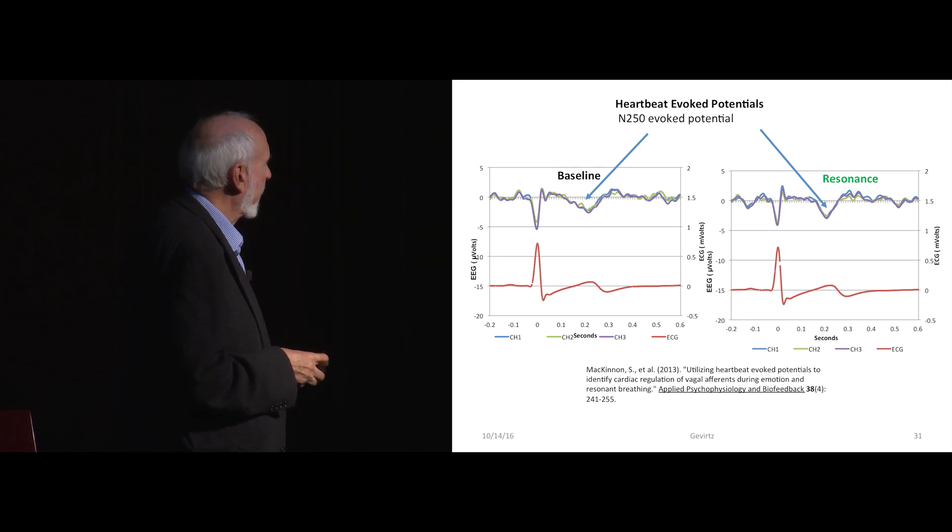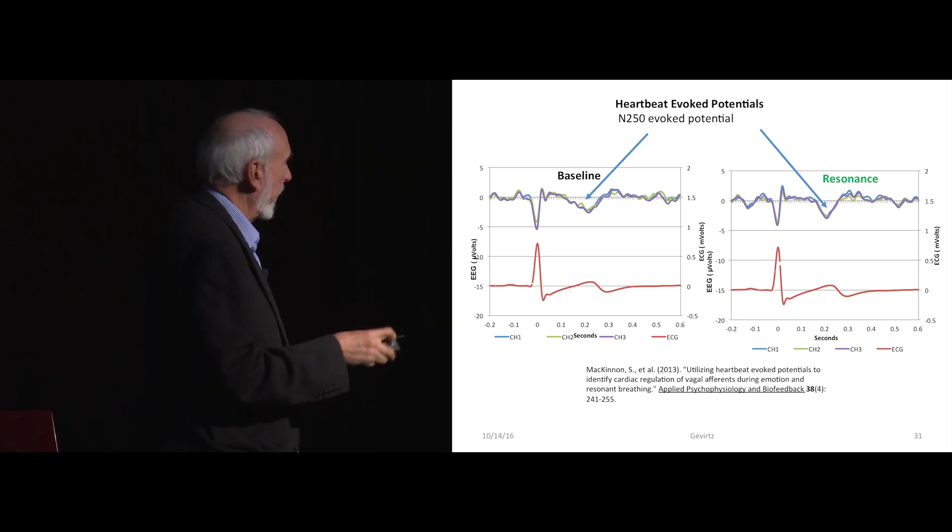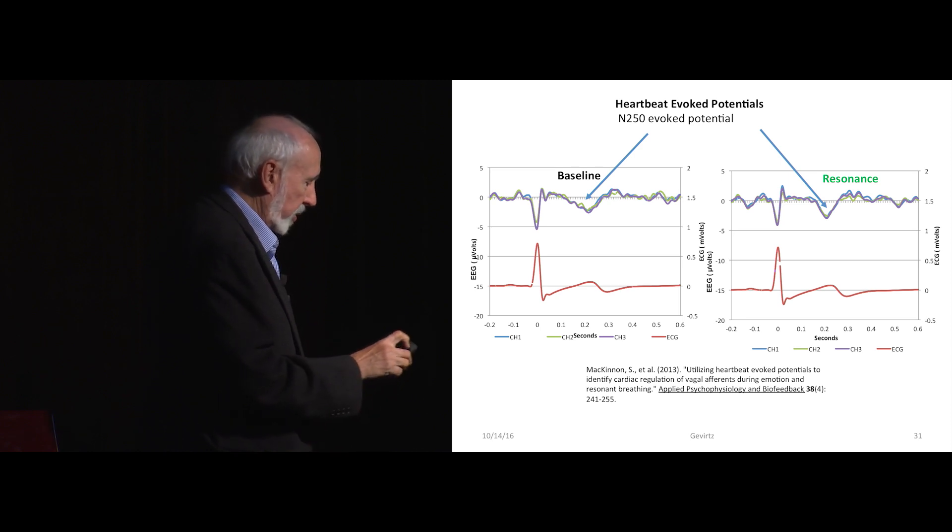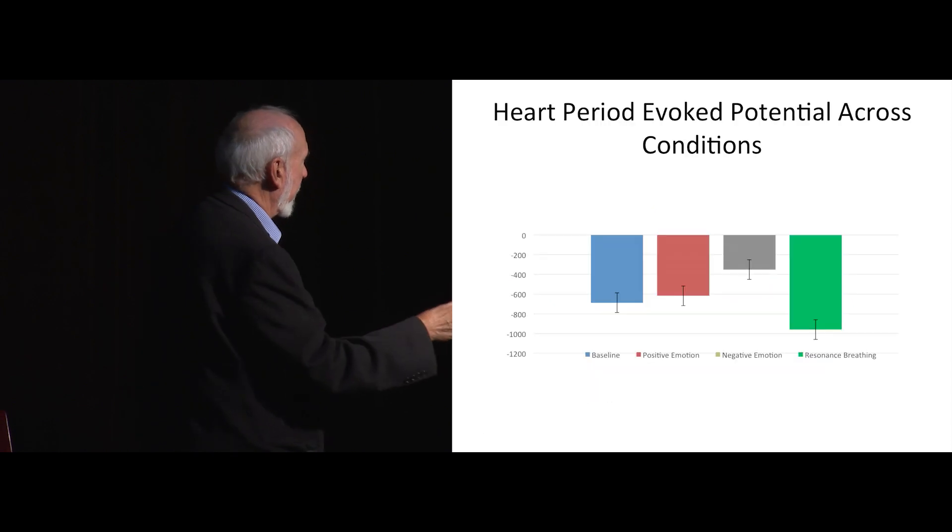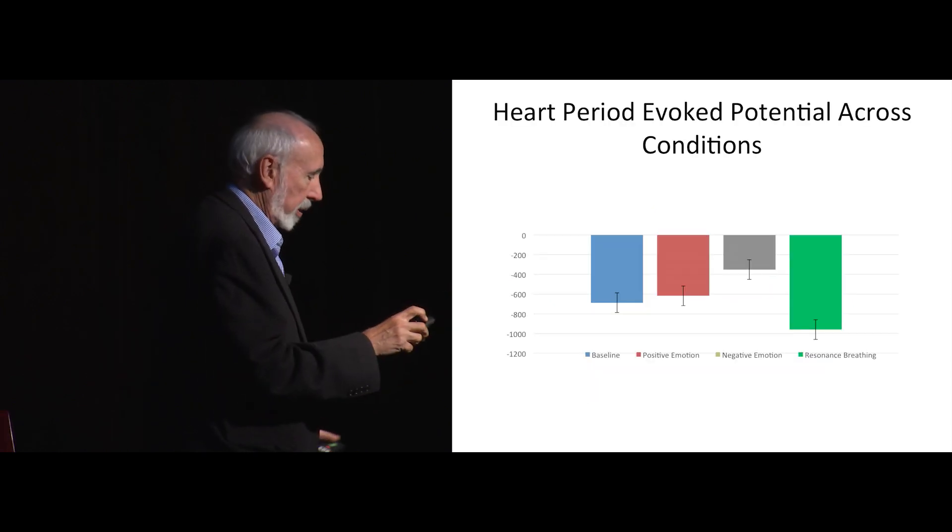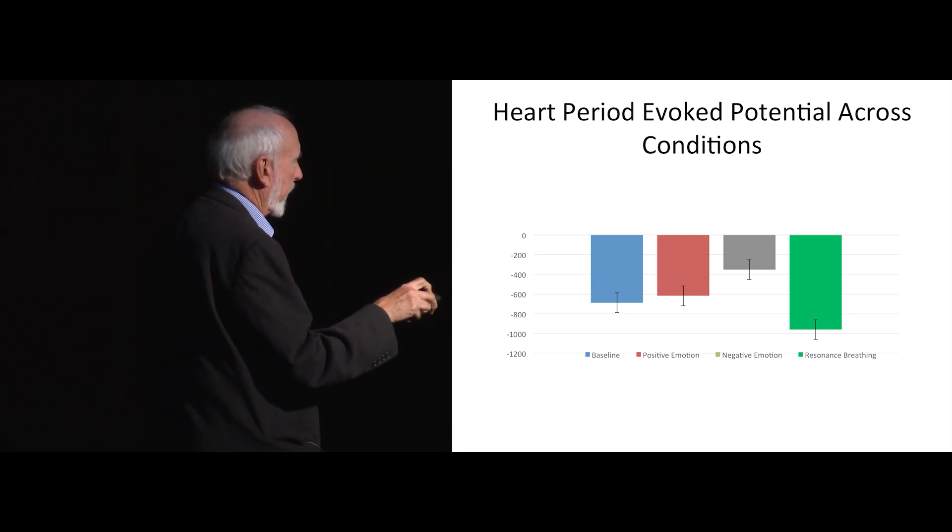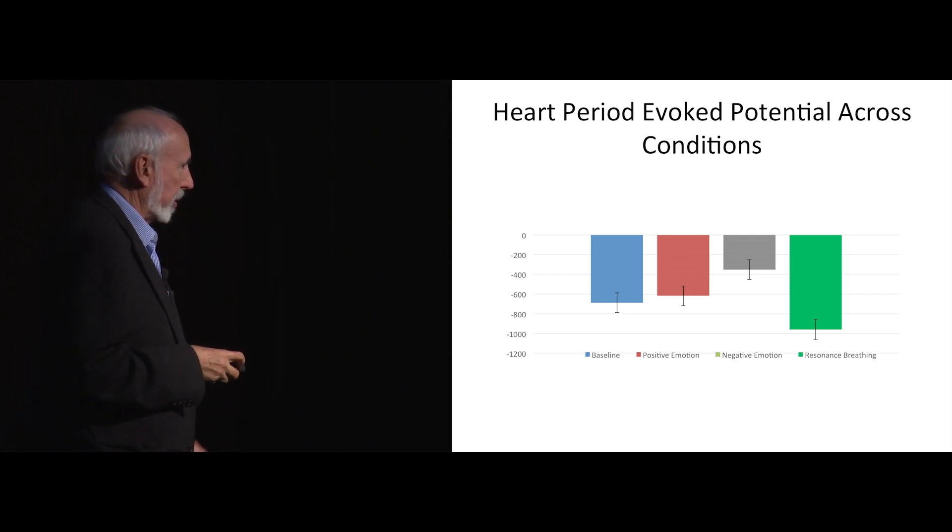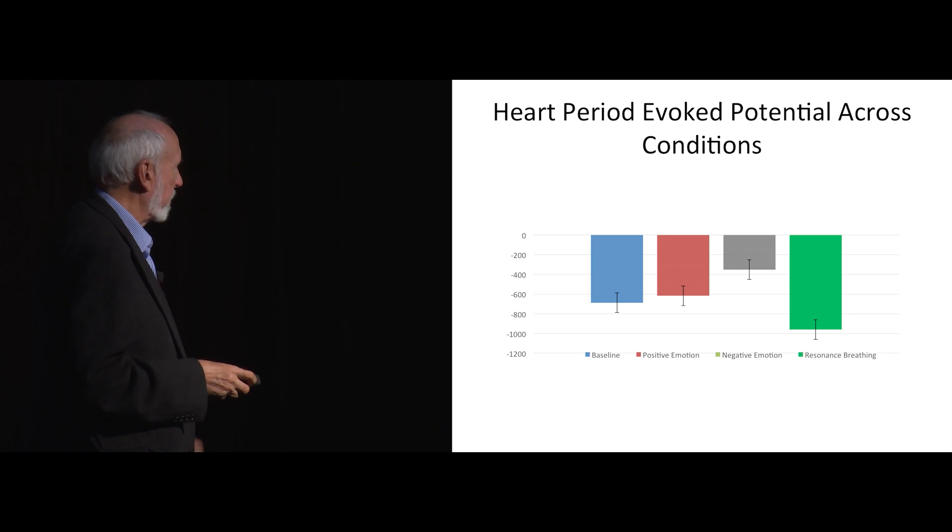So we began to look at what happens if you then have people breathe at a resonance frequency, and this was just a one-trial resonance frequency that Star McKinnon did. And you can see the resonance frequency produced the biggest N250. We think that means that we are stimulating that vagal afferent nerve into the very areas that the stimulation works at. Probably explains why we get such good results with depression and anxiety when we do this biofeedback technique.